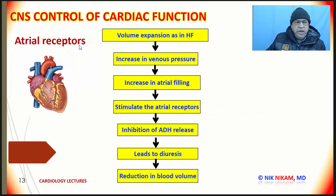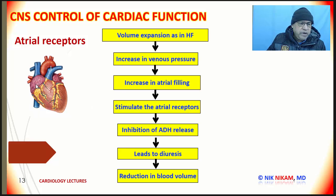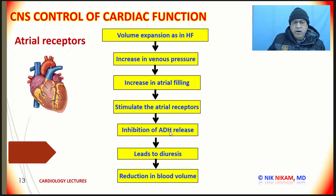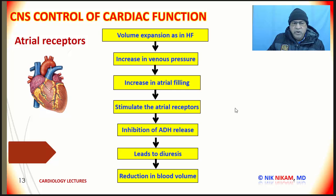Let's look at a scenario where we have volume expansion, as seen in patients with heart failure. This volume expansion leads to an increase in venous pressure, which stretches the right atrium. This releases atrial natriuretic peptide, which leads to inhibition of the antidiuretic hormone. Thus, there is an increase in diuresis, which leads to reduction in blood volume and reduces the symptoms related to congestion in patients with heart failure.